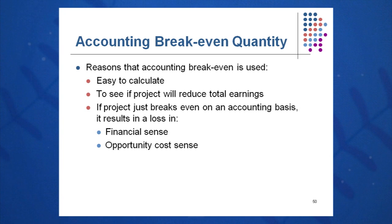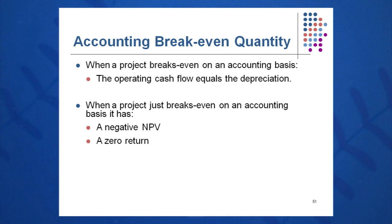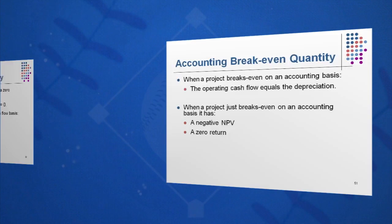This is very easy to calculate, very popular and useful — you'll see this used heavily when you go to work. A project that just breaks even on an accounting basis results in a loss in a financial sense and in an opportunity cost sense. When a project breaks even on an accounting basis, OCF equals D, and it will give you a negative NPV and a zero return on investment.